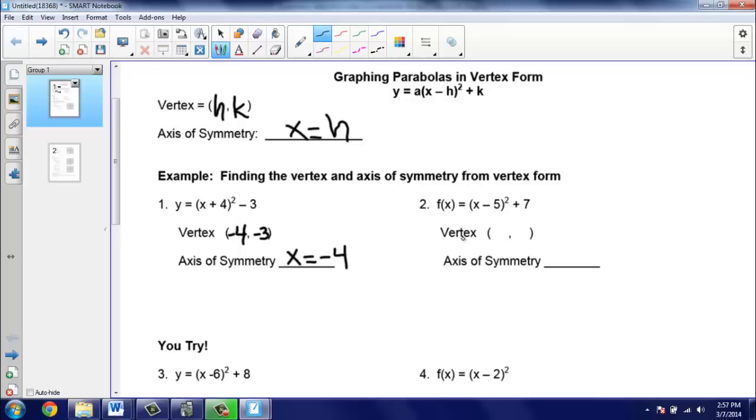So next one, we want to find the vertex. Our h value here is negative 5, so we'll change the sign and that will become positive 5. And then our y value here will be 7. So our vertex is at the point 5, 7. And our axis of symmetry will be the equation x equals positive 5. And that's it. Not too bad.